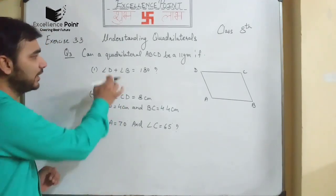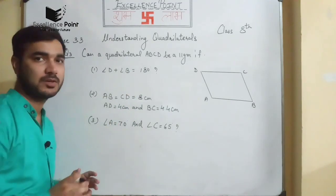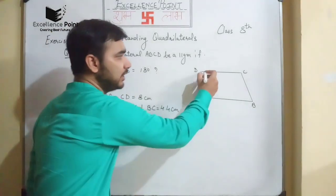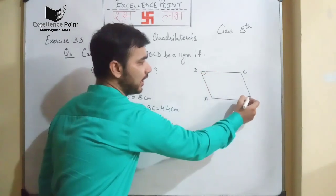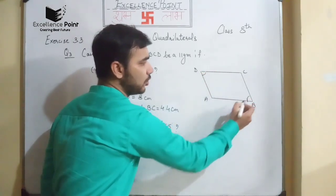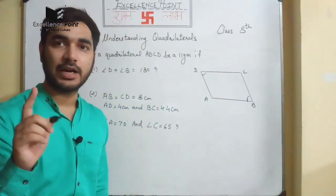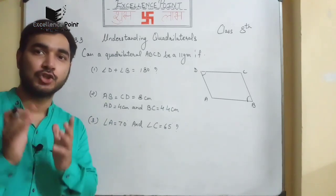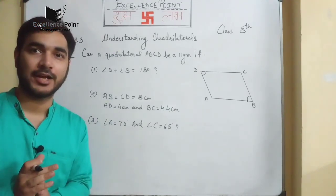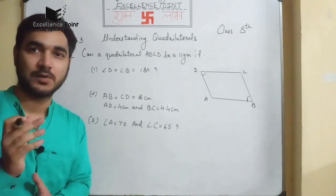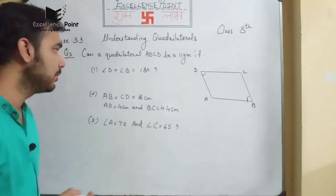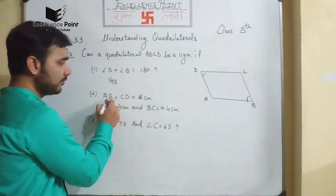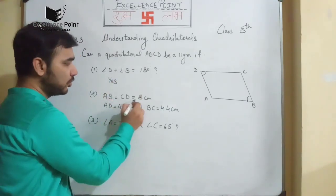The question asks: if angle D plus angle B equals 180 degrees, can it be a parallelogram? Suppose angle D is equal to 90 degrees and angle B is also equal to 90 degrees — at that condition it can be like a square or rectangle. Both square and rectangle are parallelograms, so the answer is yes, it can be a parallelogram.